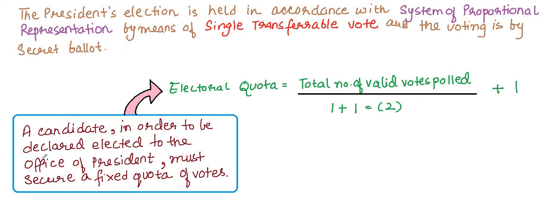A candidate, in order to be declared elected to the office of President, must secure a fixed quota of votes. The electoral quota is calculated as: total number of valid votes polled divided by (1+1), i.e., divided by 2, plus 1.